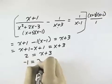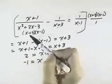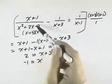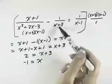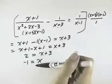I have negative 1 equals x. Double-checking to substitute that into the denominator, it will not make this one 0, and it will not make either of those 0, so negative 1 is a solution,